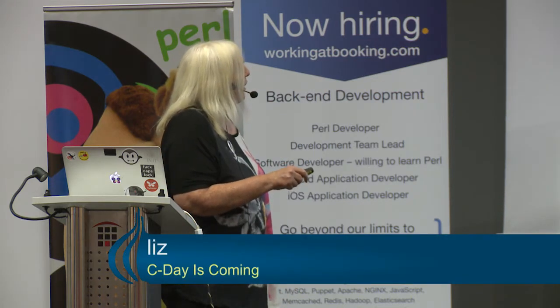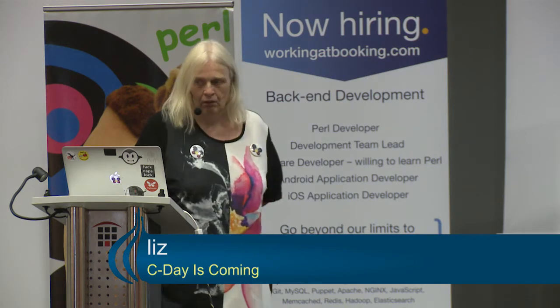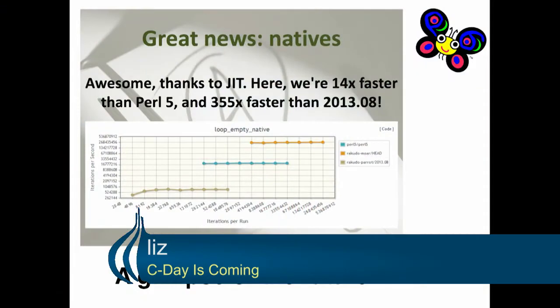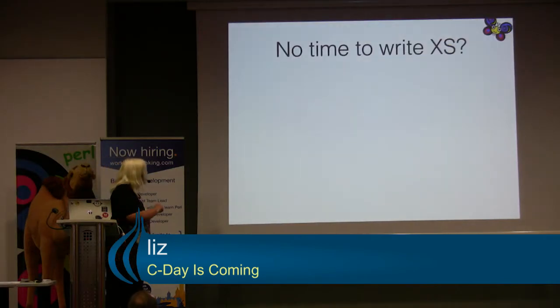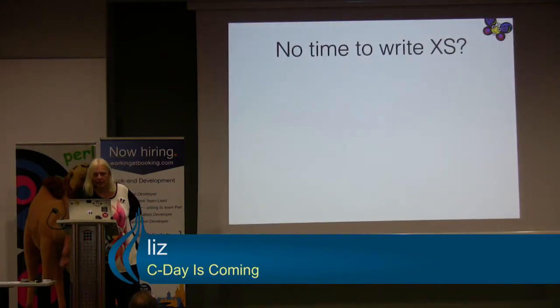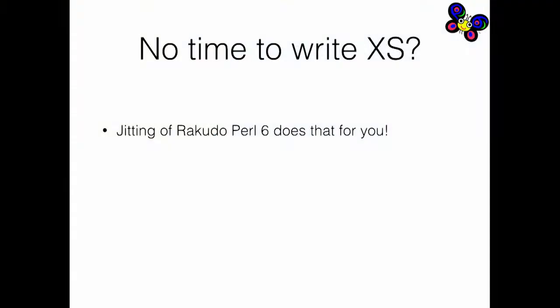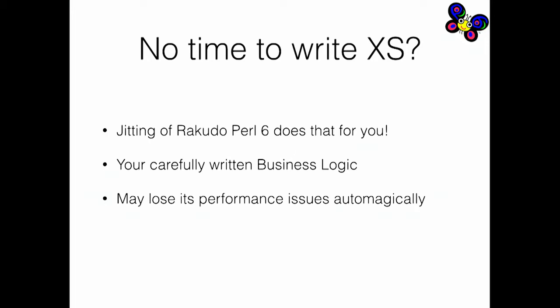Another glimpse of the future from Jonathan's talk: here we are 14 times faster than Perl 5. It's a benchmark — lies, damn lies, and statistics, I know. But this is a glimpse of the future. If you don't have any time to write XS, JITting your Perl 6 code will do that for you. So your carefully written business logic that is suffering from performance issues will automatically lose those performance issues.